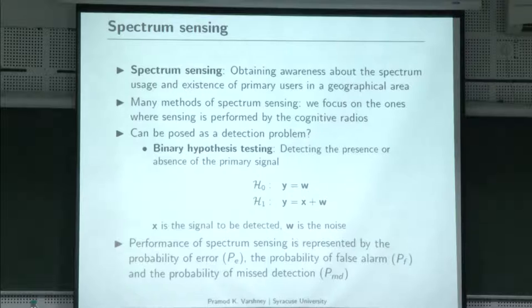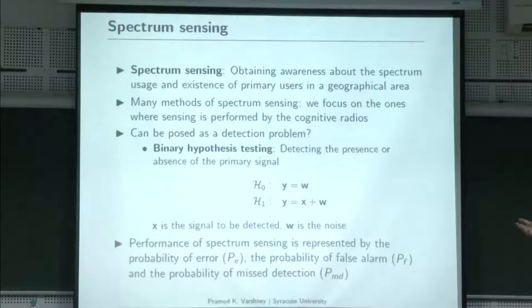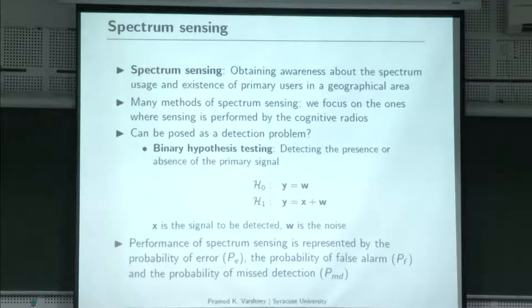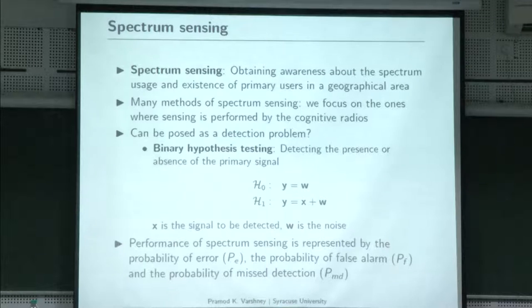Spectrum sensing can be posed as a detection problem, and tomorrow we will spend time on detection theory. The fundamental problem is the binary hypothesis testing problem: you are trying to detect the presence or absence of a primary signal. More generally, detection theory handles binary problems — is something present or absent, or did you transmit a one or a zero? Those are all binary detection problems.